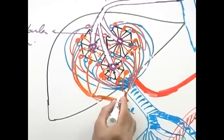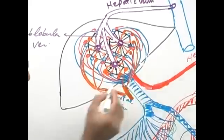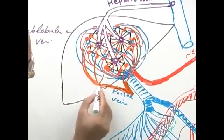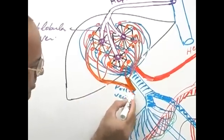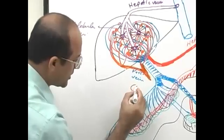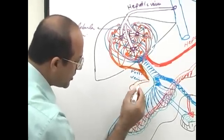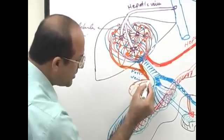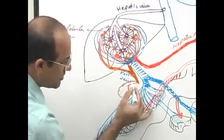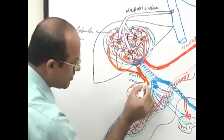The bile ducts from every corner converge to form the left hepatic duct and the right hepatic duct. These come together to form the common hepatic duct. There is also the gallbladder connected via the cystic duct.